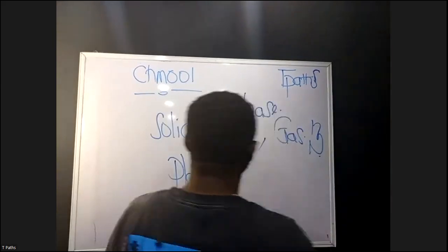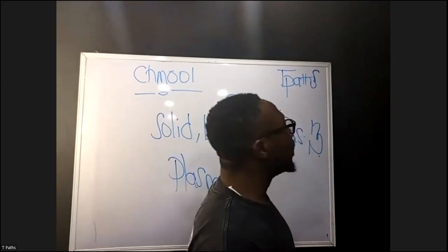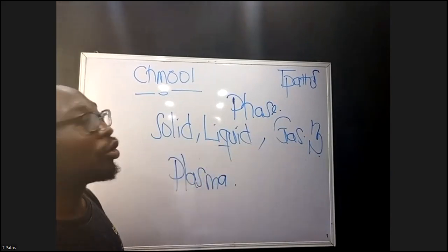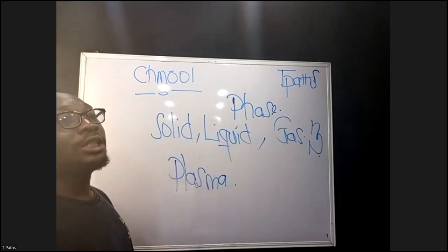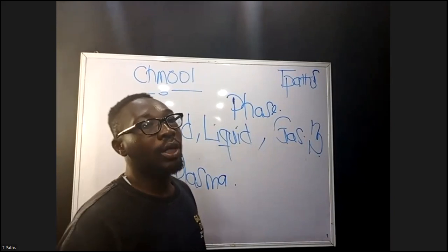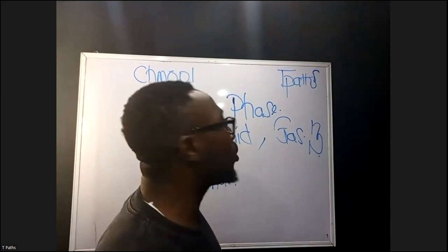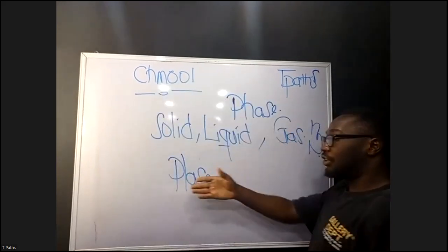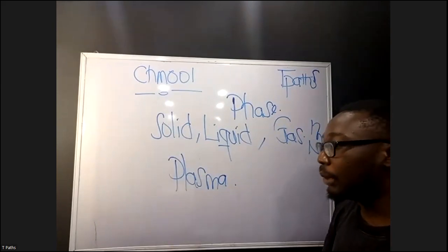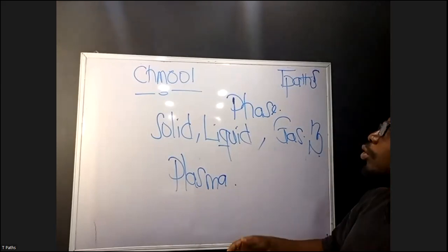One of the basic features you can observe about states of matter is that you can easily identify them. For example, if I give you a plastic of water, liquid takes the shape of its container. You can say this is a liquid — it does not have a fixed shape, it takes the shape of whatever container you put it in.